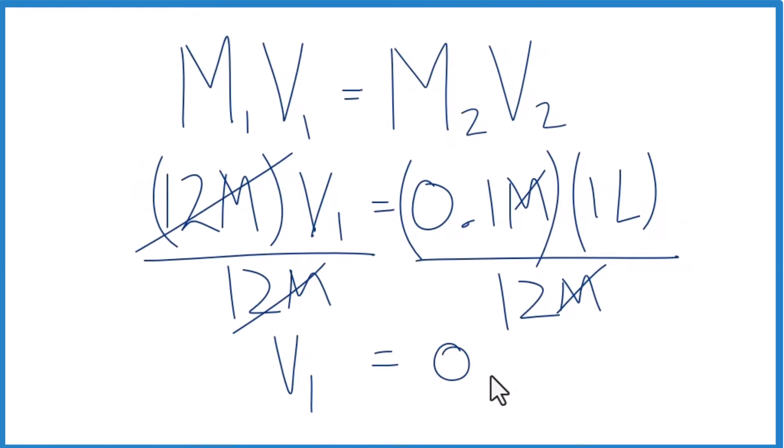And that gives us 0.0083. Those are liters. If we wanted to change this to milliliters, we multiply it by 1,000, we'll get 8.3 milliliters, just like the recipe showed us.